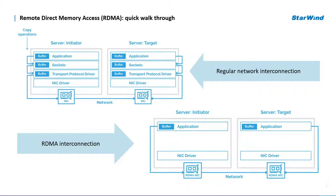Mostly you can find RDMA in high-performance computing clusters, massive data center networks, cloud computing, medical appliances, storage, backup systems, and financial services where low latency, high bandwidth and a small CPU footprint are critical.